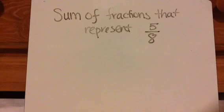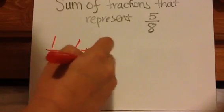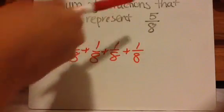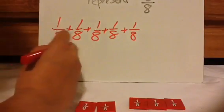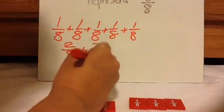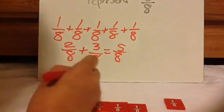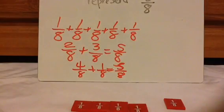So if I were to ask what is the sum of fractions that represents 5 eighths, this is what it would look like: 1 eighth plus 1 eighth plus 1 eighth plus 1 eighth plus 1 eighth equals 5 eighths. But if it doesn't say unit fractions and just says sum of fractions, there are actually multiple answers — you could say 2 eighths plus 3 eighths equals 5 eighths, or 4 eighths plus 1 eighth equals 5 eighths.